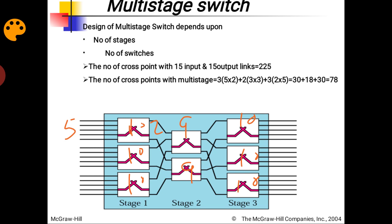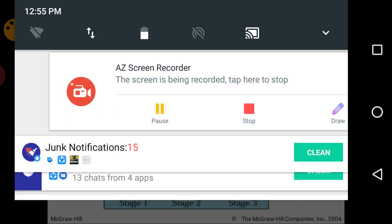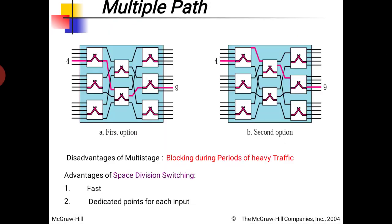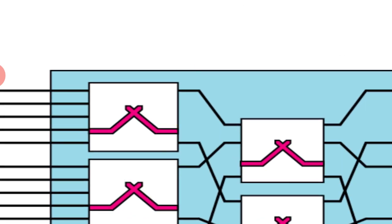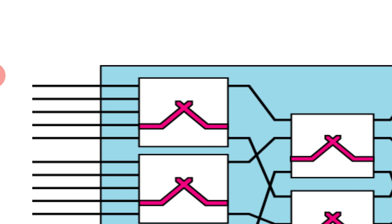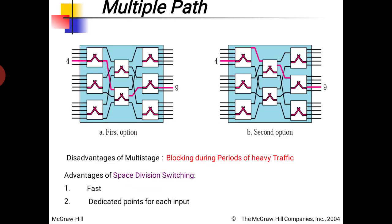The benefit of the multistage switch is a reduced hardware requirement. Our assumption is that all users will not be communicating simultaneously. In this diagram, the first switch handles 2 calls from 5 users at a time; if we have 3 calls from 5 users, congestion starts — so a traffic problem is possible. Another benefit is multiple paths: if one middle-stage switch has a problem, an alternative path through a different switch can be used.